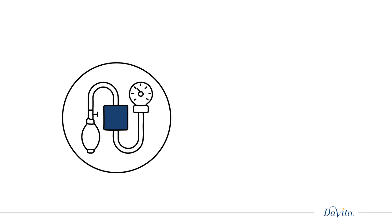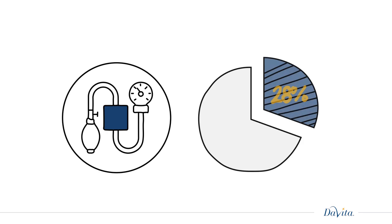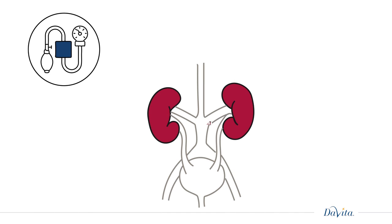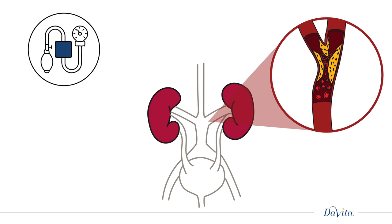High blood pressure, or hypertension, is the second most common cause of kidney disease and is responsible for about 28% of kidney failure. If left untreated, the blood vessels in your kidneys that carry blood throughout the body can be permanently damaged.